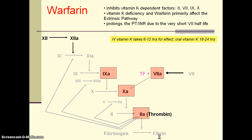Warfarin is an indirect factor inhibitor. It inhibits the vitamin K-dependent factors 2, 7, 9, and 10, as well as protein C and S. Vitamin K deficiency and warfarin anticoagulation primarily affect the extrinsic pathway because factor 7 has the shortest half-life out of all the factors. Because factor 7 has the shortest half-life among factors 2, 7, 9, and 10 inhibited by warfarin, the primary effect on coagulation testing is a prolongation of the PT-INR.